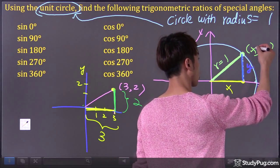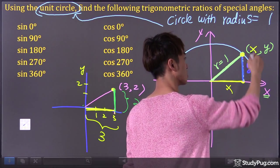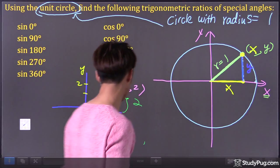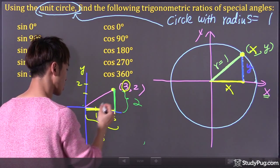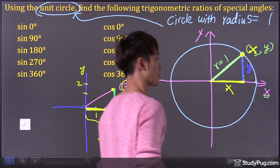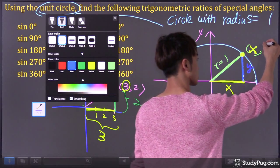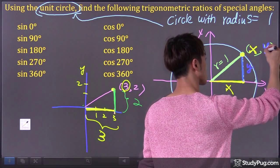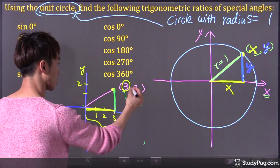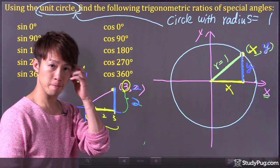So once again, for any point, we have an X-coordinate. The X-coordinate means the length of this segment will just be X. If the X-coordinate is 3, the length here should be 3. Same thing: if the Y-coordinate is Y, the length of this segment should be Y. When the Y-coordinate is 2, the length of this segment is 2.